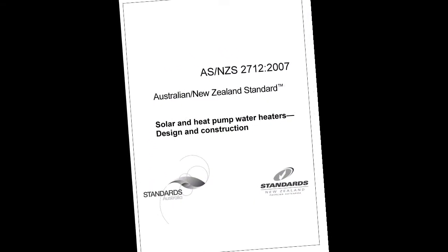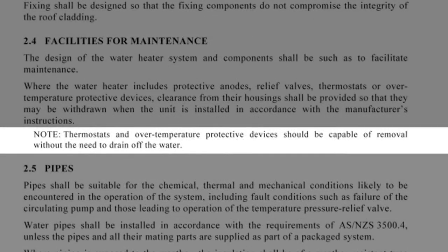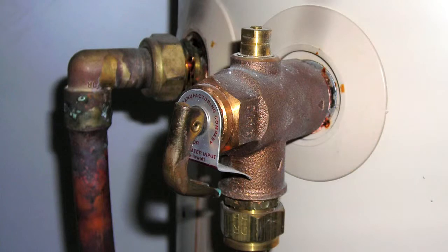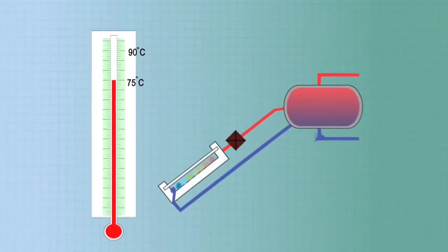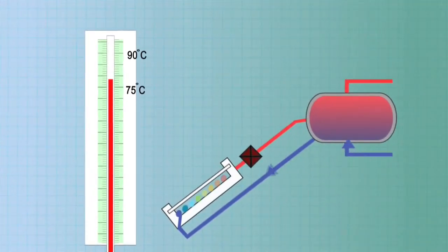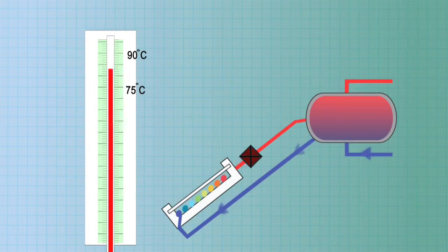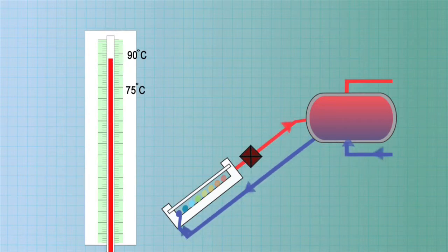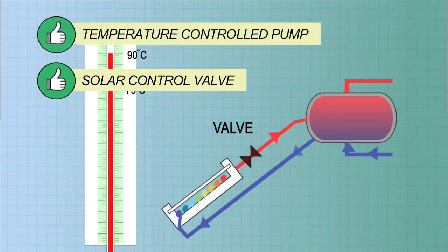The Australian standards state that solar hot water systems must provide over-temperature protection without draining water. So a temperature pressure relief valve is not enough. The most common way to prevent overheating in the tank is by automatically stopping the circulation between collector and tank when the tank water gets too hot. This can be done using a solar control valve or a temperature controlled pump.